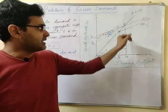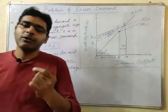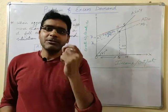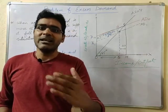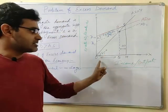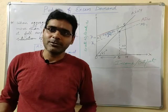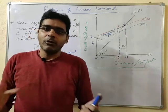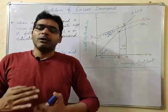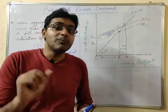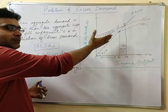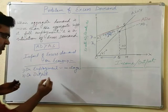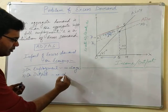Regarding the impact on output: at point F, where the economy is at full employment level of income and output, OQ is the level of output an economy can produce at its maximum. This is the maximum capacity the economy can produce by employing all factors of production. Since all factors are fully employed, output cannot be increased — there will be no change in the level of output.